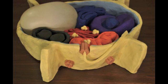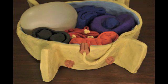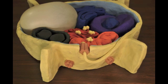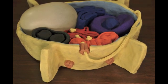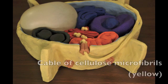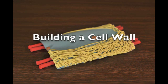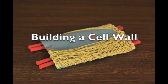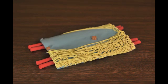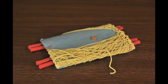Inside these rosettes, the precursor molecules are further assembled into long chains of sugar molecules — cellulose! As they're extruded out the other side, the chains wrap around each other to form a cable made of groups of cellulose microfibrils. The cable of cellulose is guided by microtubules, which form something like railroad tracks for the cable to follow.